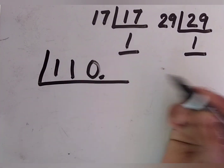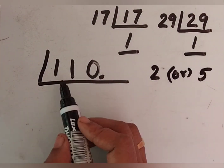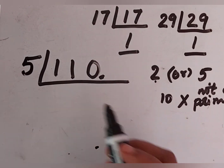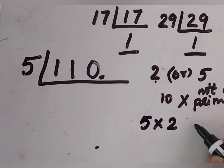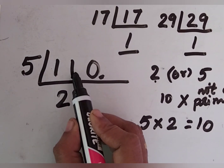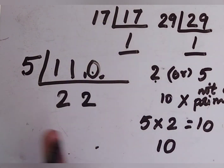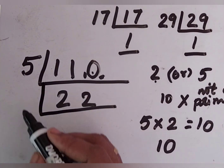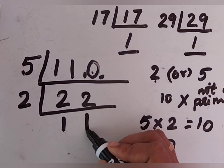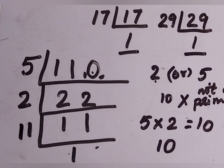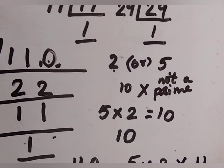Coming to the next question: 110. Since it ends in 0, we can take 2 or 5 — but not 10, as 10 is not a prime number. Let us take 5. 5 × 2 = 10. 11 minus 10 gives a remainder of 1; that 1 is kept with 0, making 10. Again, 5 × 2 = 10. Now, 22 we can divide using 2: 2 × 1 = 2, again 2 × 1 = 2. Now it is 11. 11 has only 2 factors — it is a prime number. So, 11 × 1 = 11. Our division is over. The factors are 5 × 2 × 11. 5 × 2 is 10, and 10 × 11 is 110.